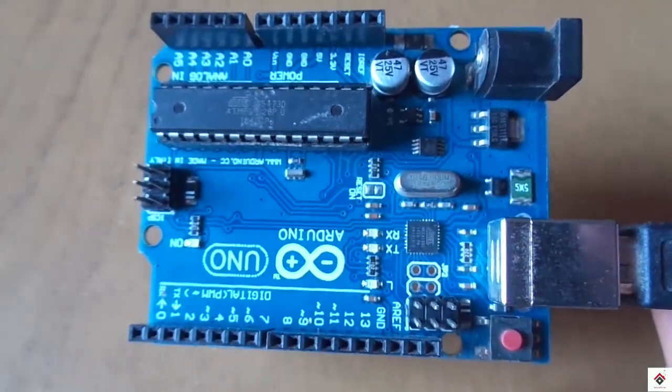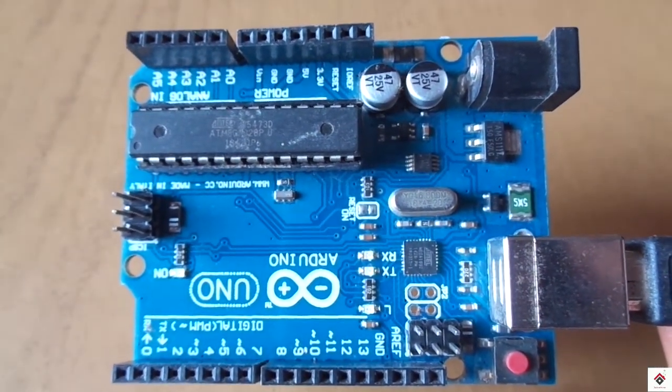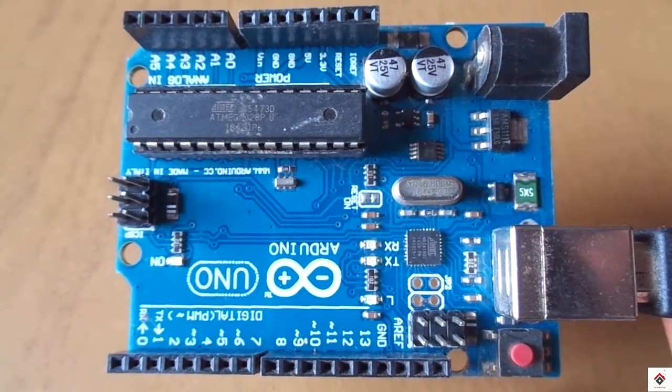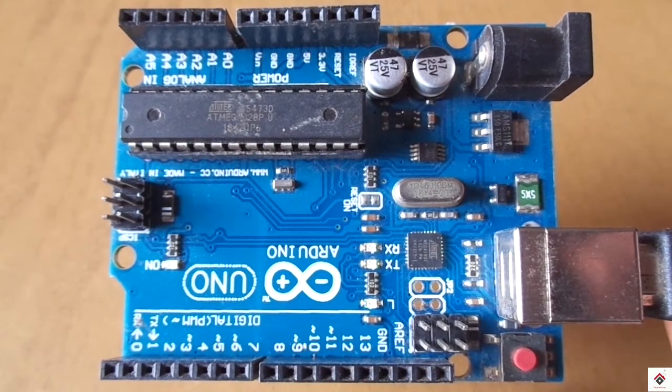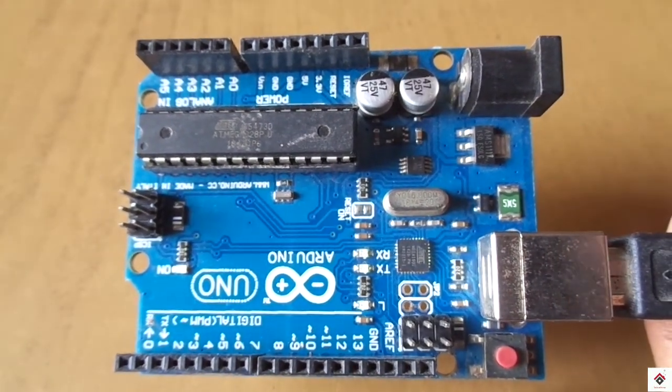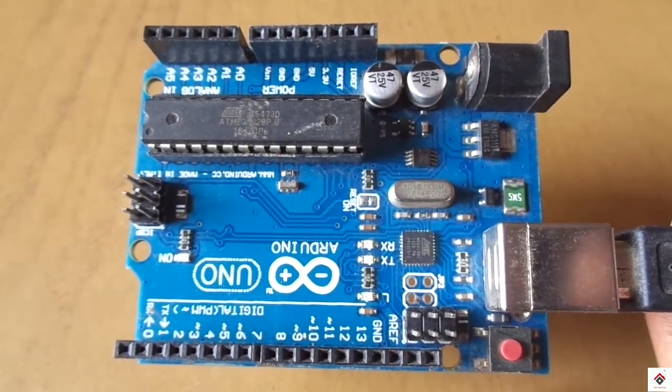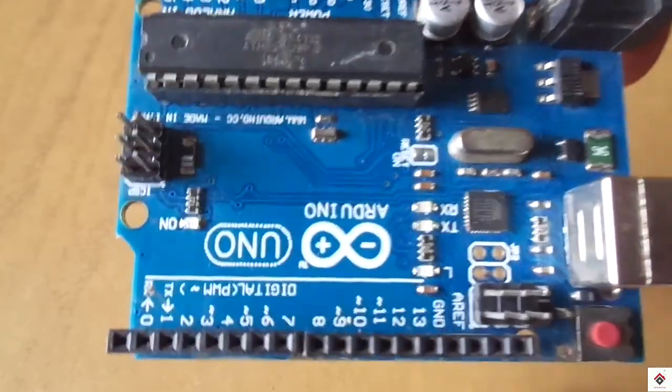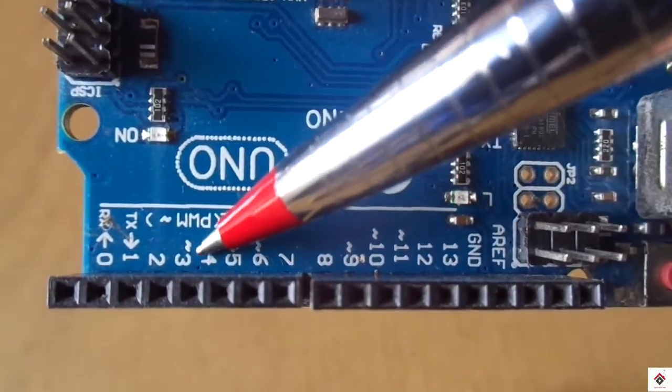So usually when we use LED with an Arduino we use the digital pins and the output will be either on or off, that is 0 or 1. But in case of PWM the output will be usually analog signal since the output varies between 0 to 5 volt based on the duty cycle. So there are particularly 6 PWM pins on Arduino Uno board indicated by analog signal.